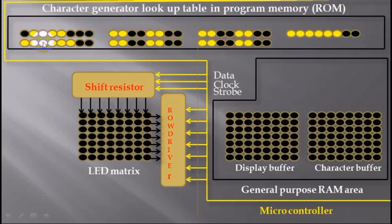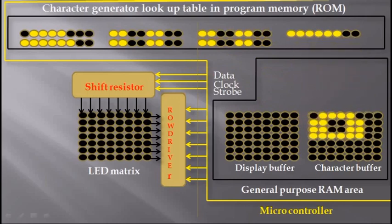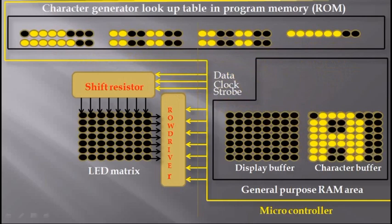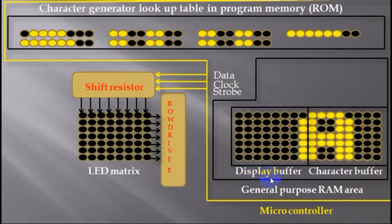After getting the first character of the message buffer, the microcontroller decodes it and copies all 7 bytes of that character one by one from the lookup table, and loads those into the character buffer row after row. Then each row of the RAM buffer shifts its bits one step left till the ending row. After bit shifting, the leftmost column of the character enters into the rightmost column of the display buffer.